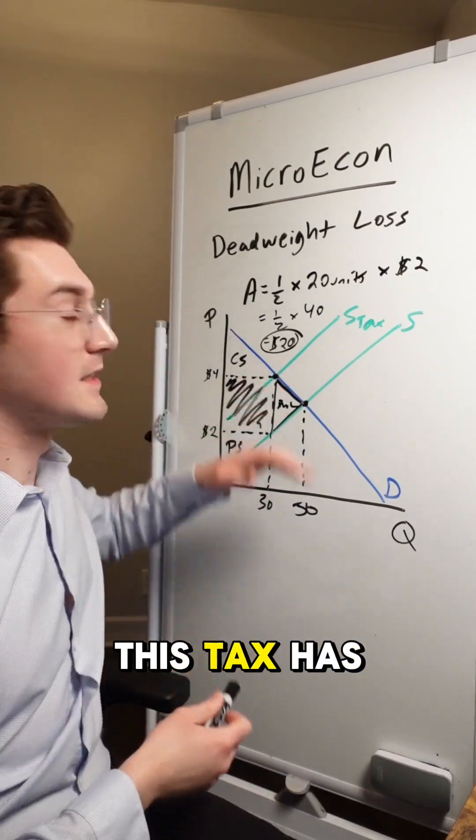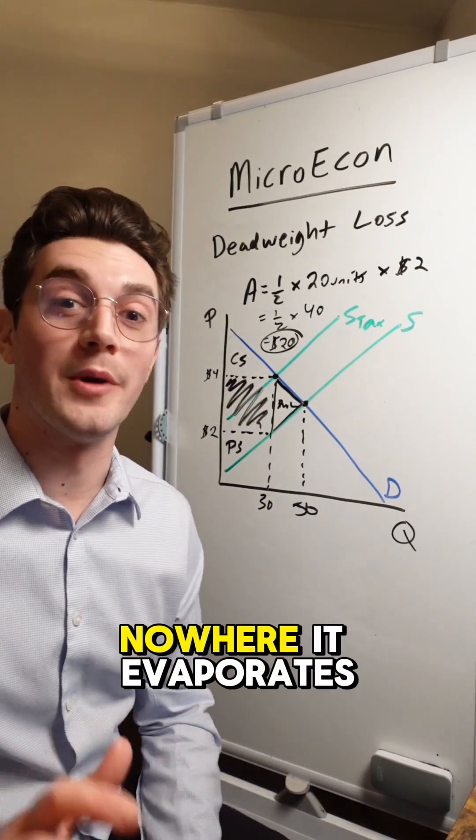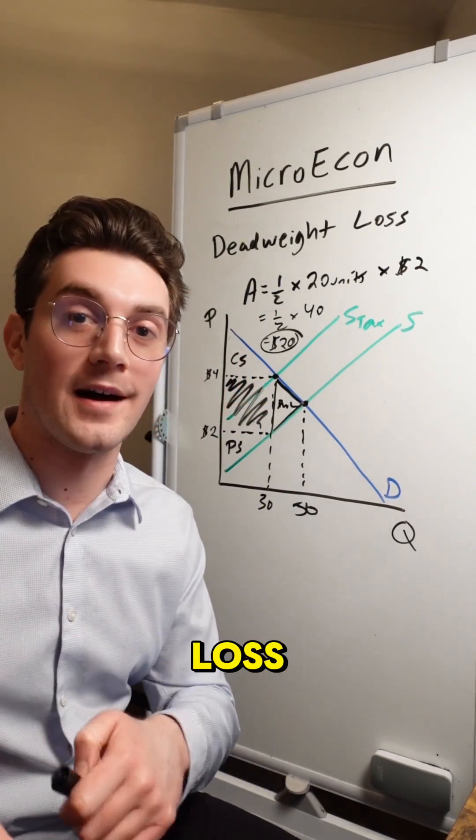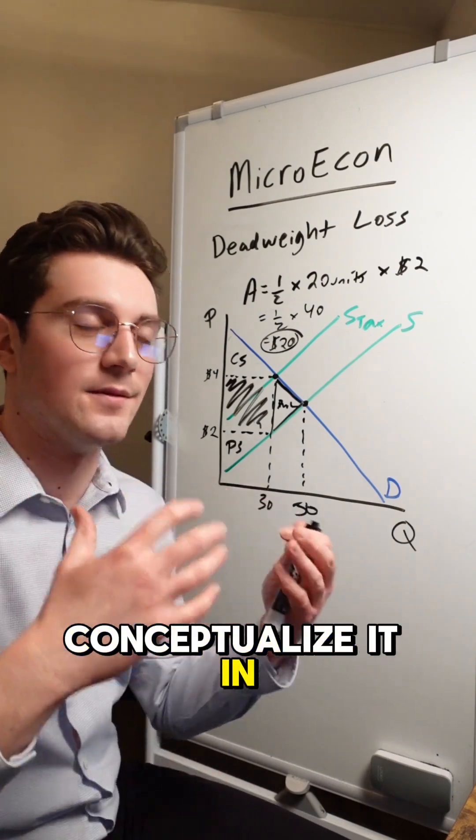In other words, this tax has reduced total surplus in this market by $20. That $20 goes nowhere. It evaporates. It's deadweight loss. That's what you got to know about deadweight loss and how to conceptualize it in the context of surplus.